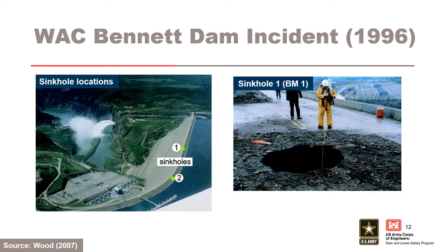An extremely loose zone was encountered to a depth of 80 meters, with a variable zone to a depth of 125 meters. The remediation method selected was compaction grouting, a method which injects, at a drained rate, columns of stiff grout bulbs into the damaged core material at very high pressure, about 7,000 kPa. A key consideration for selection of this method was its ability to reestablish some of the stresses that were lost.